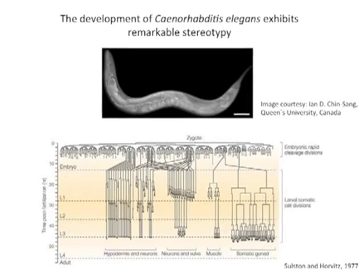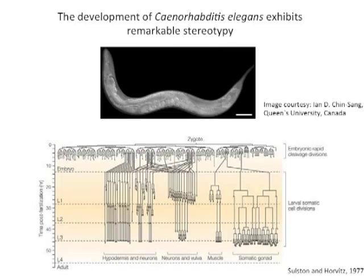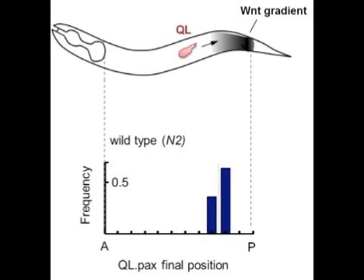We study development in C. elegans. An important aspect of this model system is that development is very constant, which means that when you compare a lot of different animals, you will see that development is always taking place in exactly the same manner, indicating that fluctuations in gene expression are very well controlled in this organism. One of the processes that we study in detail is the migration of a neuroblast, which is called a Q-cell, which always migrates to exactly the same position during larval development. One of the questions we wanted to address is how this process is so well controlled.